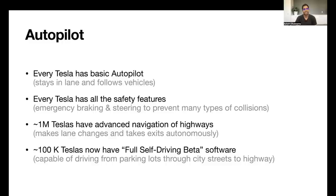For those who do not know, every Tesla that has been manufactured in the last few years has basic Autopilot. Basic Autopilot allows the vehicle to stay in the lane, follow vehicles, slow down for curves. In addition to basic Autopilot, every Tesla also comes with standard safety features. These are features such as emergency braking and steering to prevent many types of collisions.